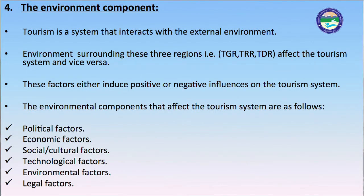The last component is the environmental component. Tourism is a system that interacts with the external environment. The three regions — TGR, TRR, and TDR — affect the tourism system and vice versa. These factors either induce positive or negative influences on the tourism system. The environmental components that affect the tourism system include: political factors, economic factors, social and cultural factors, environmental factors, and legal factors.